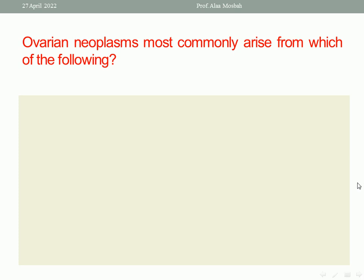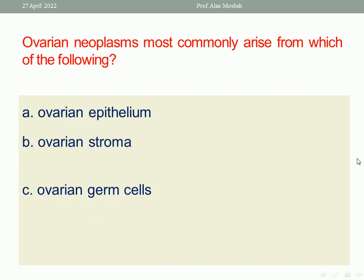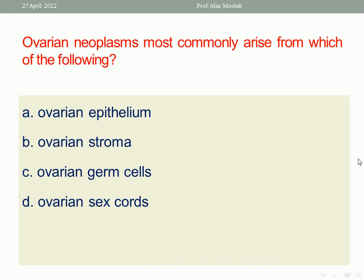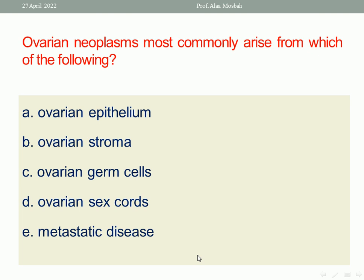Ovarian tumors most commonly arise from which of the following? Ovarian epithelium, ovarian stroma, ovarian germ cells, ovarian sex cord, or metastatic disease. The commonest is the ovarian epithelium — as we know, the epithelial cell tumor is the commonest ovarian neoplasm. So the best response here is ovarian epithelium.